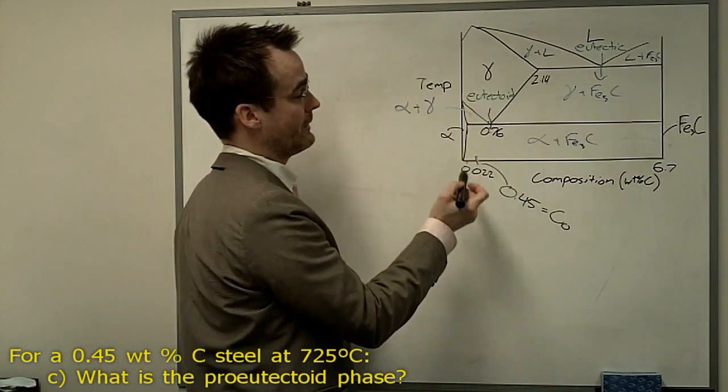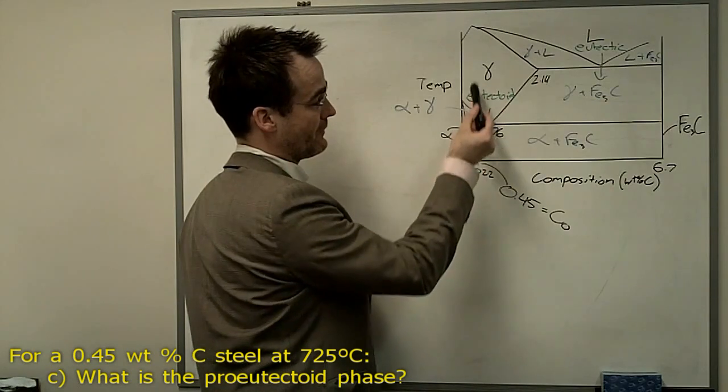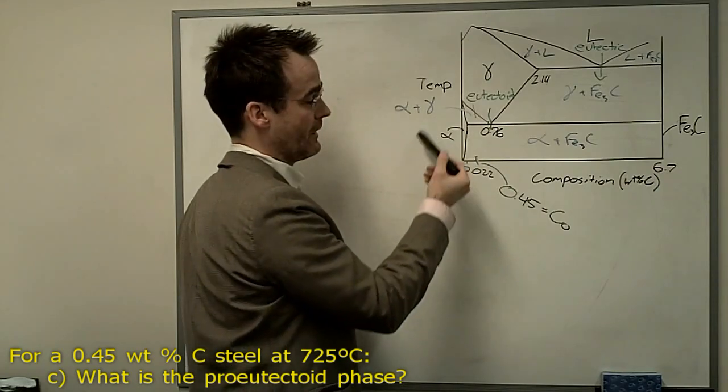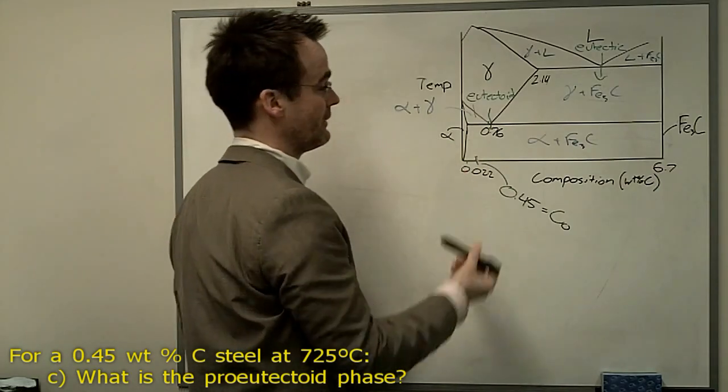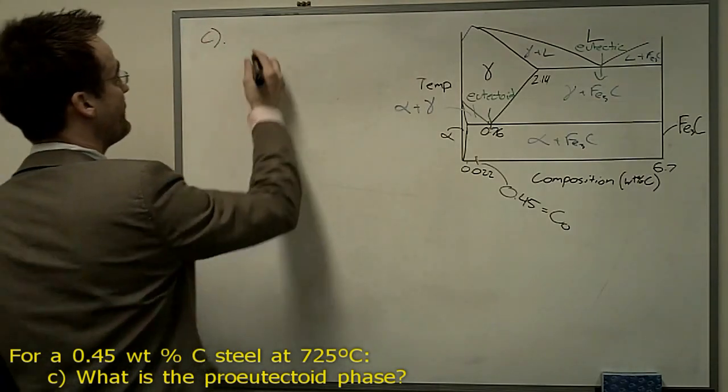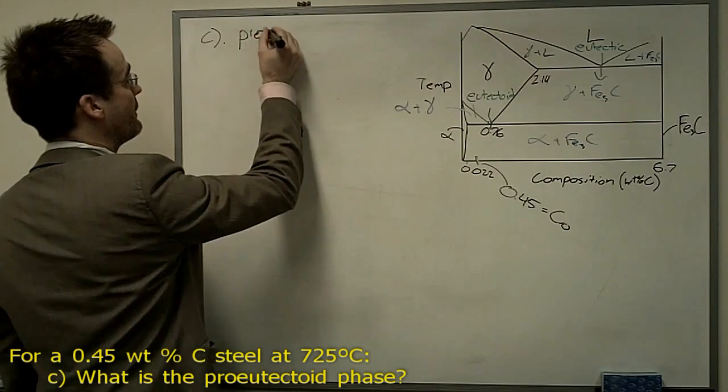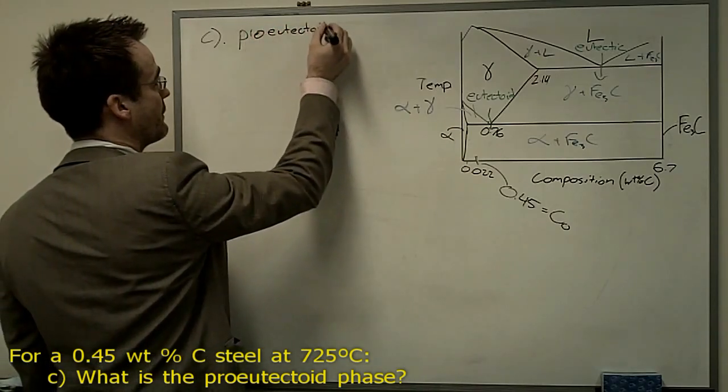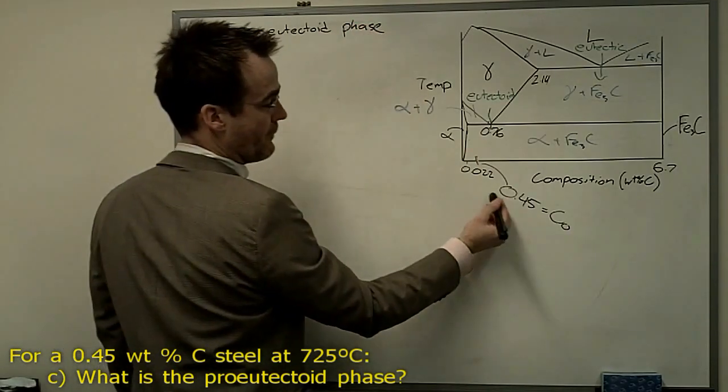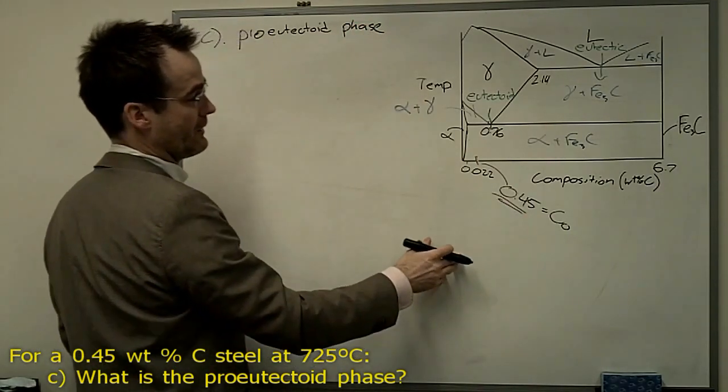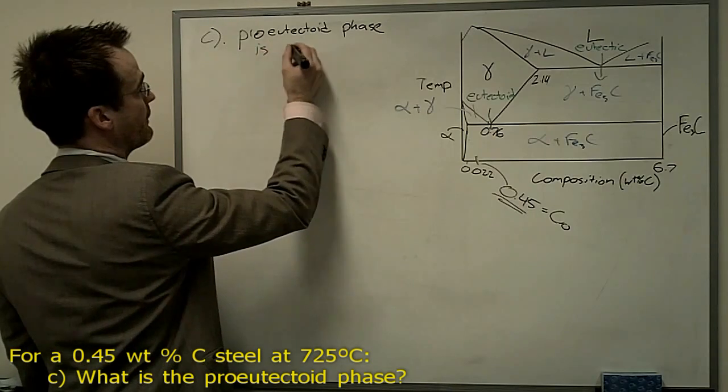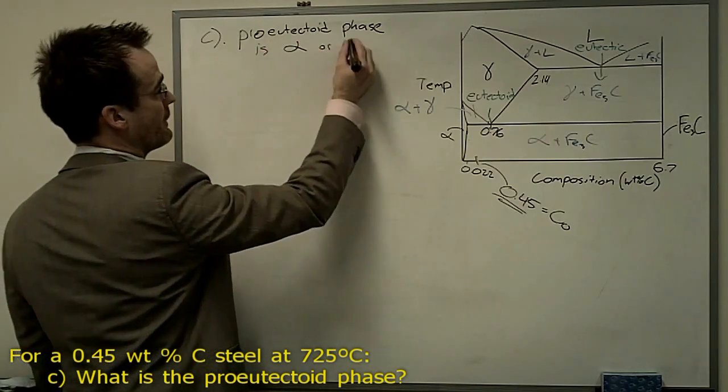That means upon cooling, we're going to move down from single phase gamma, we're going to cross through the phase boundary there, and we start to form some alpha phase, some ferrite. So that means question C, the pro-eutectoid phase for a 0.45 weight percent carbon steel is going to be the alpha phase, or ferrite.